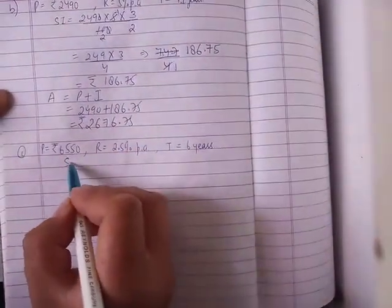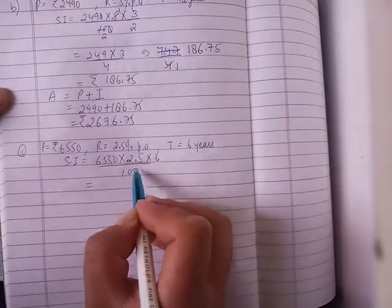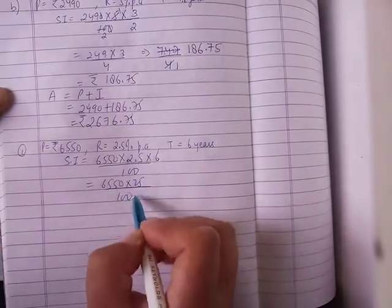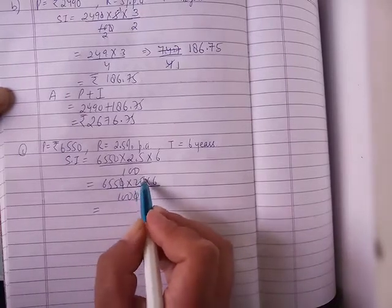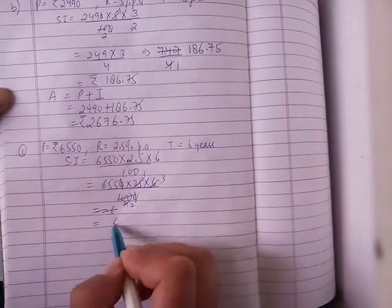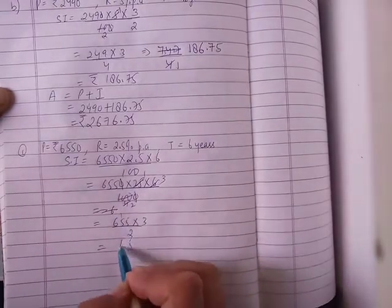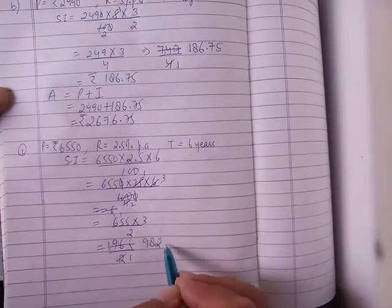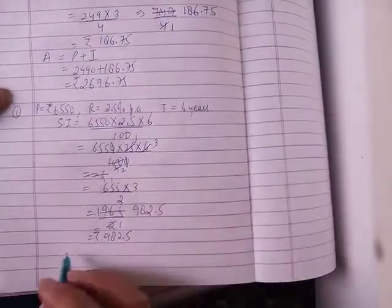Part C. Interest: 6550 into 2.5 into 6 years upon hundred. 2.5 is 25 upon 100. Cancel zero. Then into 6. Multiply 25, 125, 25 for 100. Two times 2 is 4, two times 3 is 6. Equal to 655 into 3 upon 2. Multiply: three times 5 is 15. Three times 6 is 18, 19. 1965 upon 2. 982.5 is the interest.